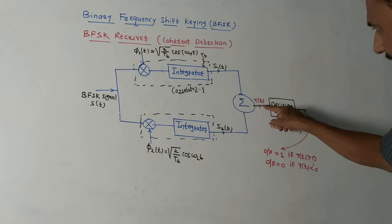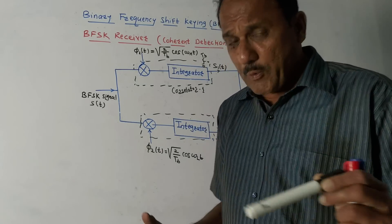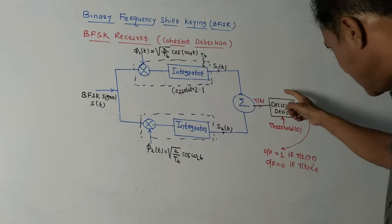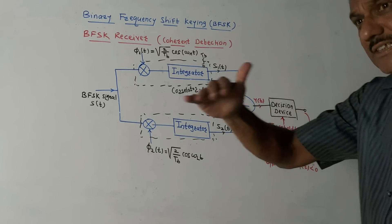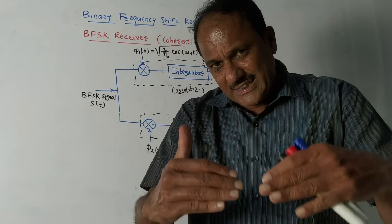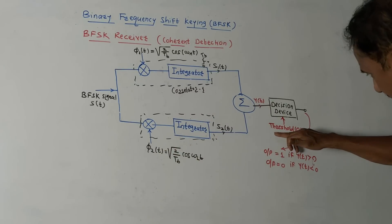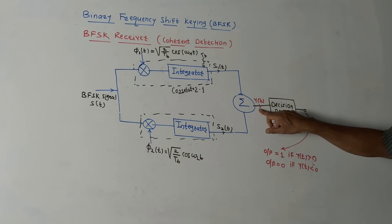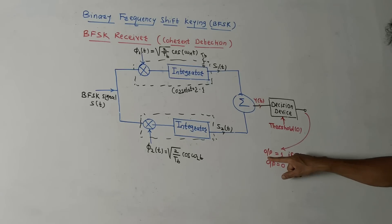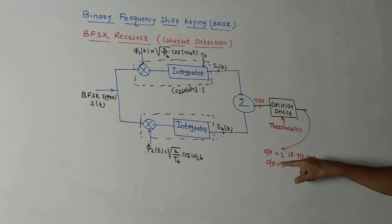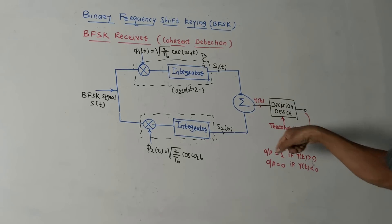The output of the first correlator is s1(t) and the output of the second correlator is s2(t). These two outputs are added, giving y(t). A decision device uses a reference of zero to determine the output: if y(t) > 0, the output is logic one; if y(t) < 0, the output is logic zero. This is how the decision is taken.